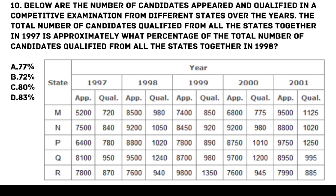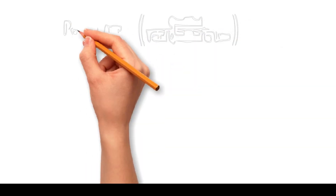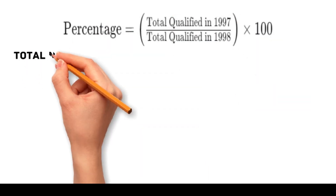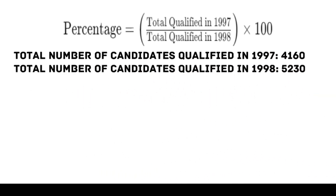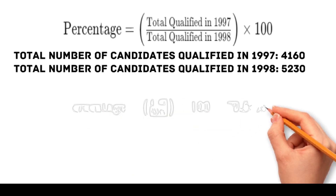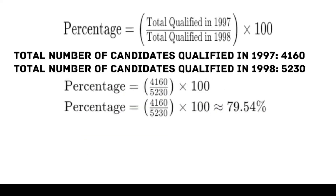To find the percentage, we use the formula: percentage = total qualified in 1997 / total qualified in 1998 × 100. The total number of candidates qualified in 1997 is 4,160, and in 1998 is 5,230. Percentage = 4,160 / 5,230 × 100 = 79.54%. Thus, the total number of candidates qualified in 1997 is approximately 80% of those in 1998. The correct answer is C, 80%.